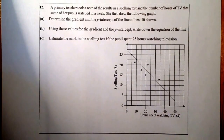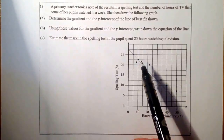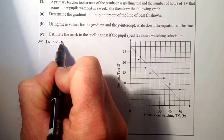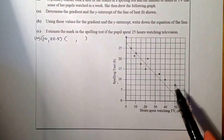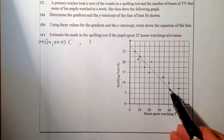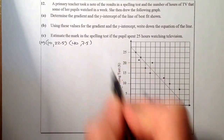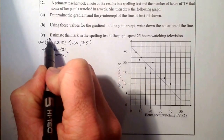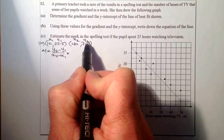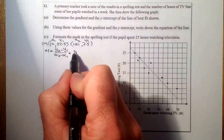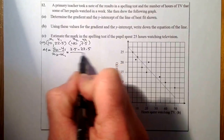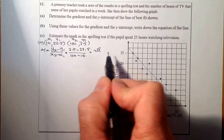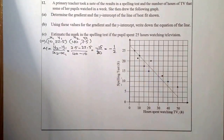I'll choose two points on the line. The first point is (10, 22.5) and the second is (40, 7.5). The gradient formula is (y₂ − y₁) / (x₂ − x₁). Substituting in: (7.5 − 22.5) / (40 − 10) = −15 / 30, which simplifies to minus a half.